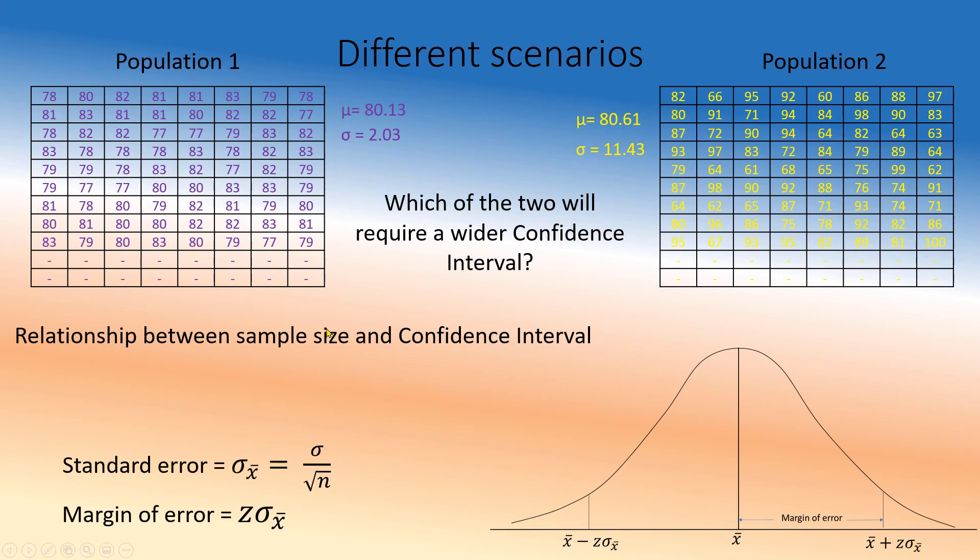Relationship between sample size and confidence interval. If my sample size is small, well, intuitively you can say if you only ask two people, you have to give a wider interval to be 90 percent confident, right? Because you only got two people. If you ask 100 people, you can get tighter. So n, sample size n.